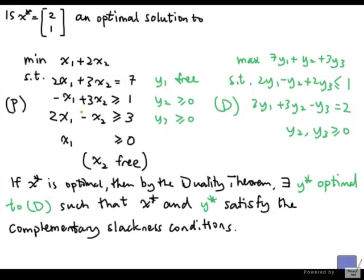What about the third inequality? I have 2 times 2, that's 4, minus 1, that's 3. Again, x star satisfies this with equality. So we didn't gain any information looking at those conditions.